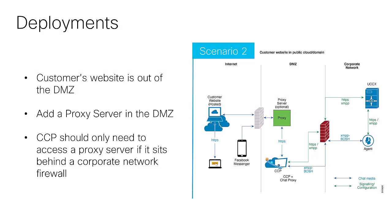On the other hand, in the second scenario, the customer's website is outside the DMZ and a proxy server is added which translates the domain between CCP and the website. Also, the CCP should only need to access this proxy server if it is behind a corporate firewall.